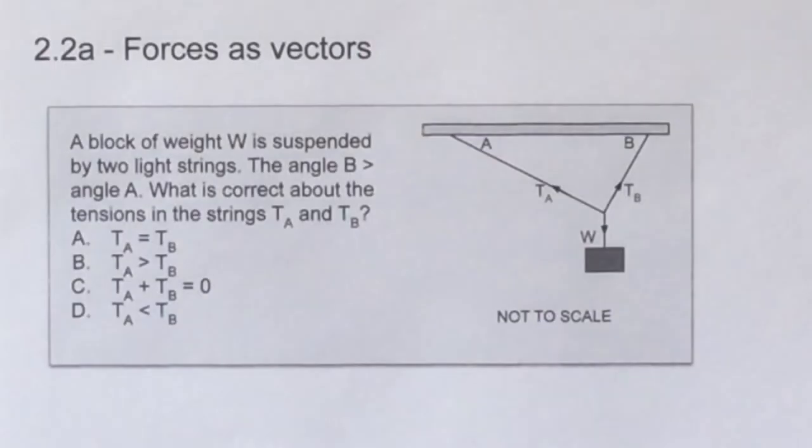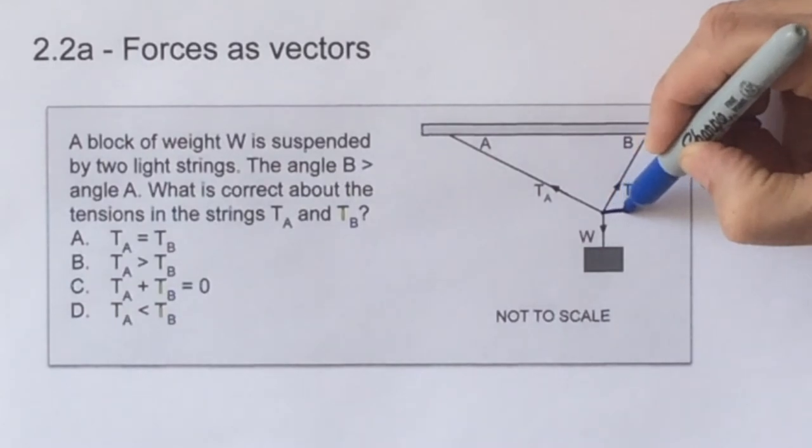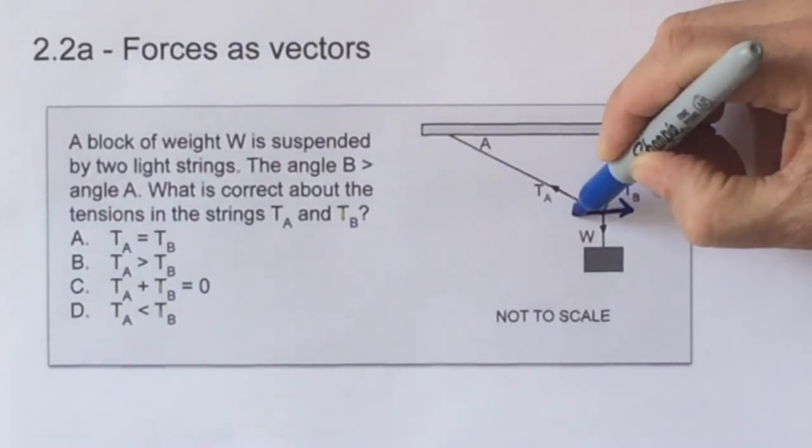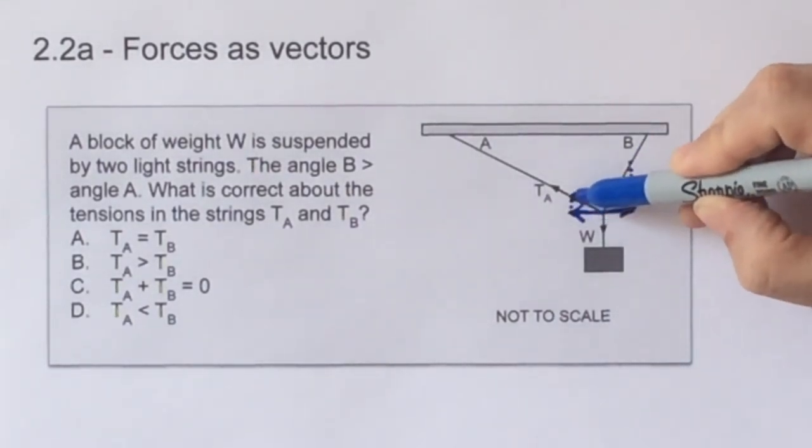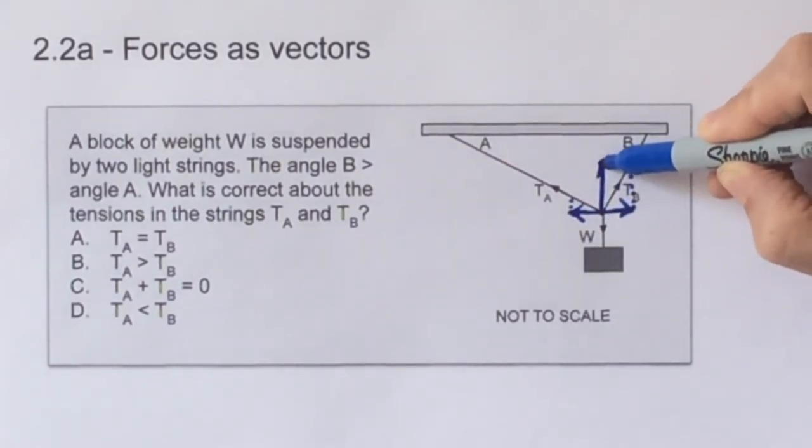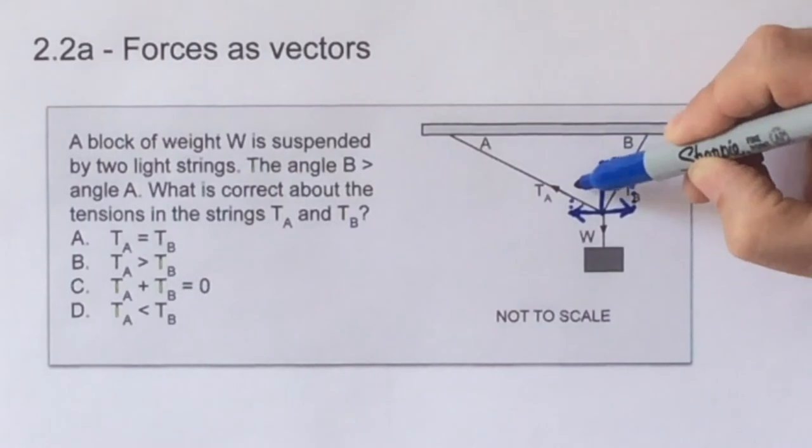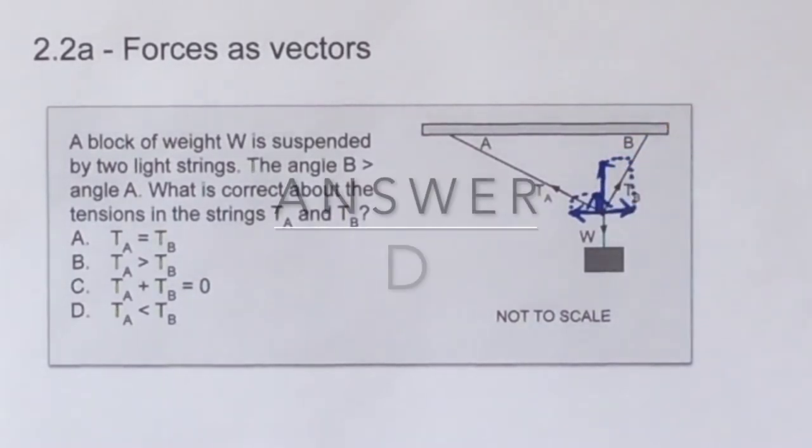This block is hanging in equilibrium, and we know that the three forces TA, TB, and W must be equal to each other as vectors. So the only ones which contribute horizontal forces are TA and TB, and they must be equal to each other to the left and to the right. So we draw those in, and then using the angles of the strings, we can find the vertical components of the tensions, and we can see that the tension in B is therefore much greater than the tension in A. And so the answer to this question is letter D.